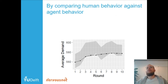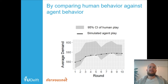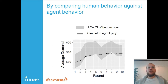The gray area is what humans do — the 95% confidence interval of human play. The black line is the simulated agent's play. The more they coincide, the more realistic the agent is. If you want to know more, you can read about it in the paper we published.